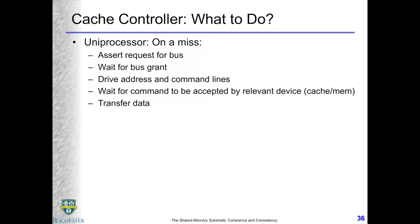Let's go back and think about the canonical uniprocessor. It doesn't really exist — we don't have a true uniprocessor. There's always another bus master in any reasonably sophisticated machine for real-world use, such as a DMA or IO device. But let's pretend we have a canonical uniprocessor where there is a core issuing commands and there is a cache controller.